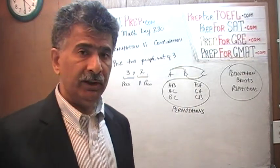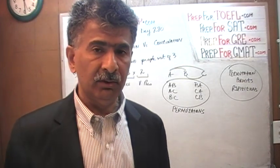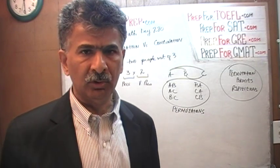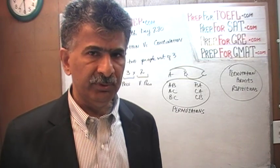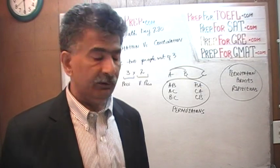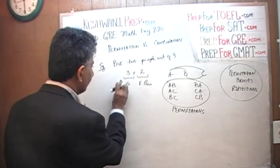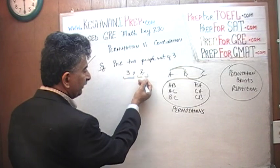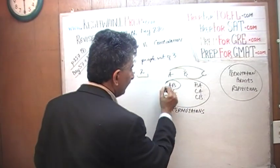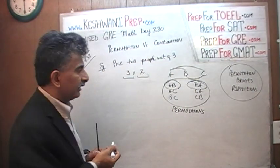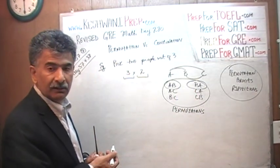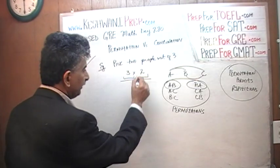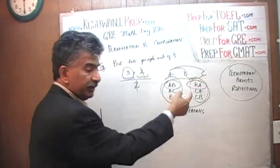When order does not matter — for example, we simply need to form a committee and pick two people out of three to do some job — it doesn't matter which one you pick first. There are three ways of picking a first person and two ways of picking a second person, but every combination is being repeated: A-B and B-A is the same thing. Since everything is being repeated, we have to take half as many, and there are only three different ways.